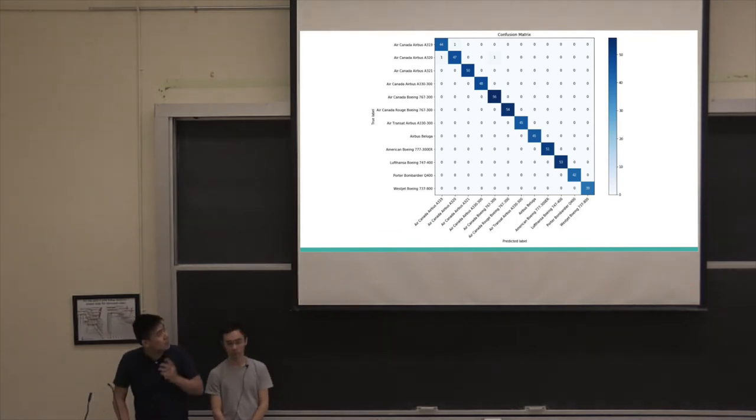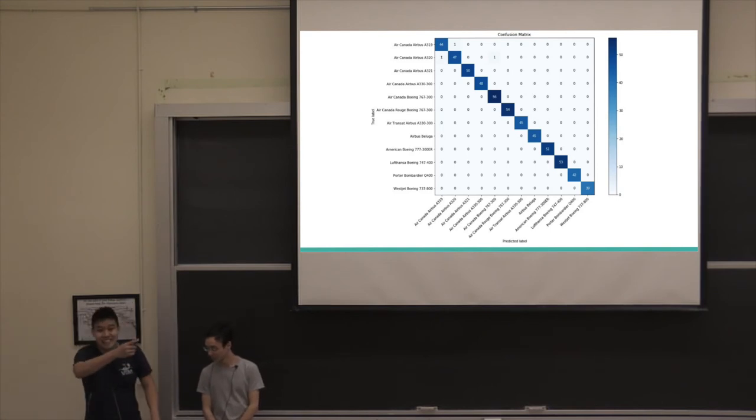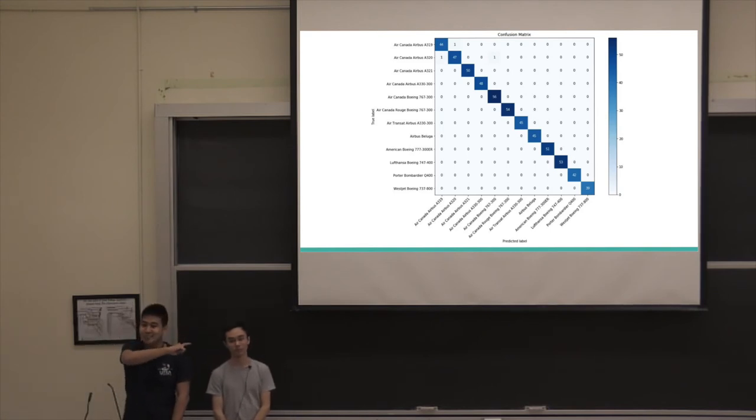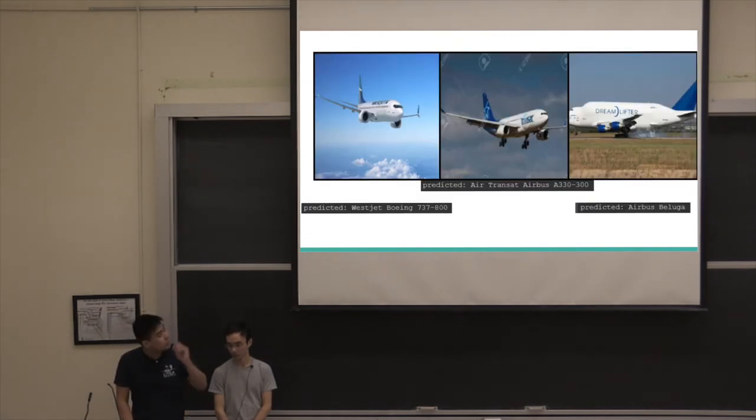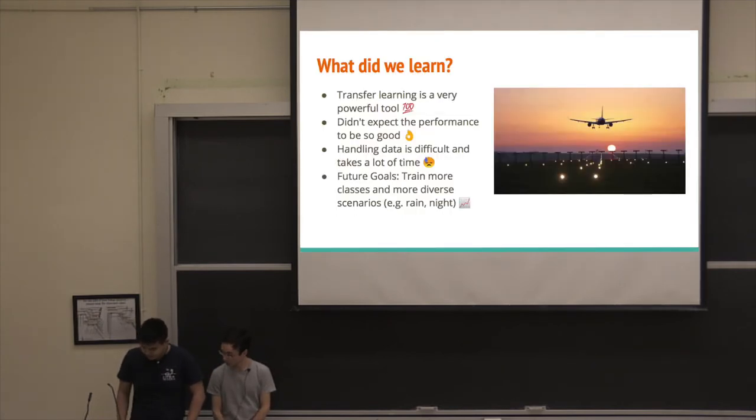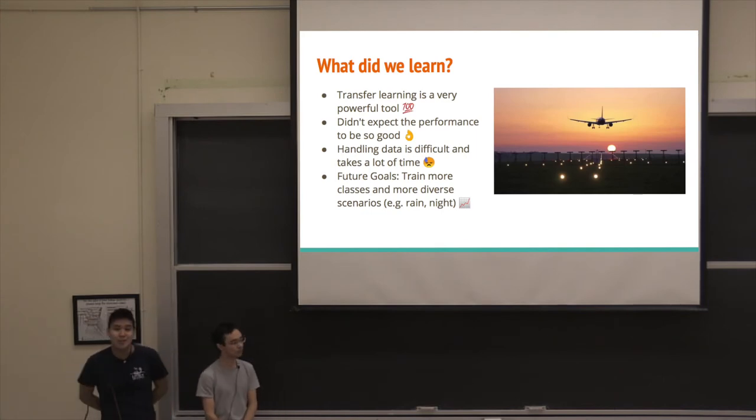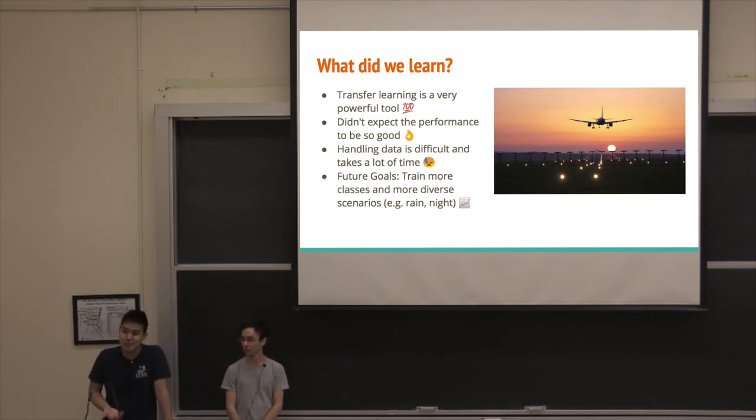This is our confusion matrix. You can see a very strong diagonal. The only things that got confused were actually the two planes that I showed in the beginning, those two Air Canada planes, which humans would have a very hard time telling anyways. Some more interesting examples of crazy angles and different, there's even watermarks on the second picture. And generally what we learned is that transfer learning is a great tool, and it's something that we should try and expand on in the future. We might train on different classes if we had more time, but we were a little bit time constrained on this project, so we only did daytime side angles. Thank you very much.